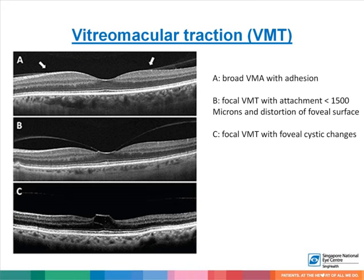This shows the grading of VMT. In picture A, you see broad VMA with adhesion. In picture B, there is focal VMT with attachment less than 1,500 microns and with distortion of the foveal surface. In picture C, there is focal VMT with foveal cystic changes.